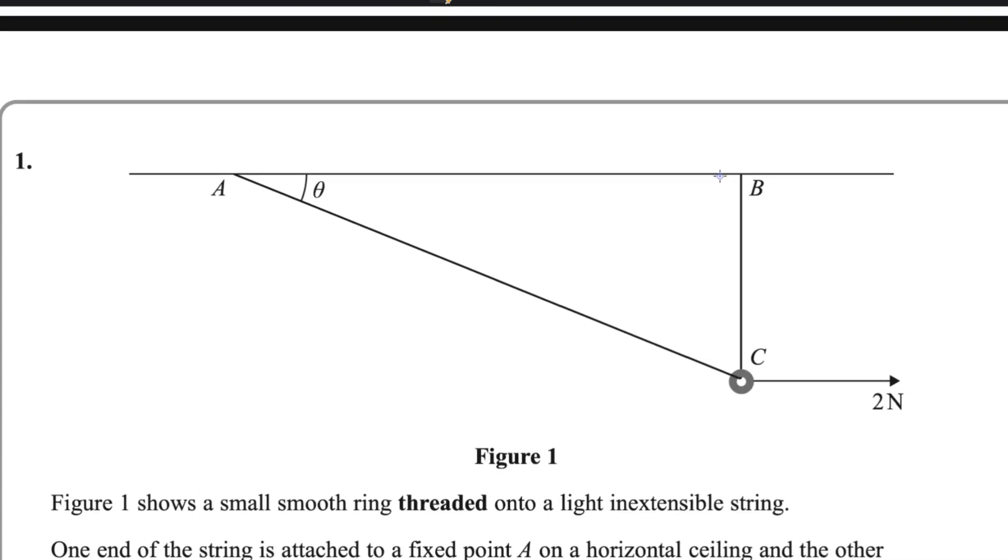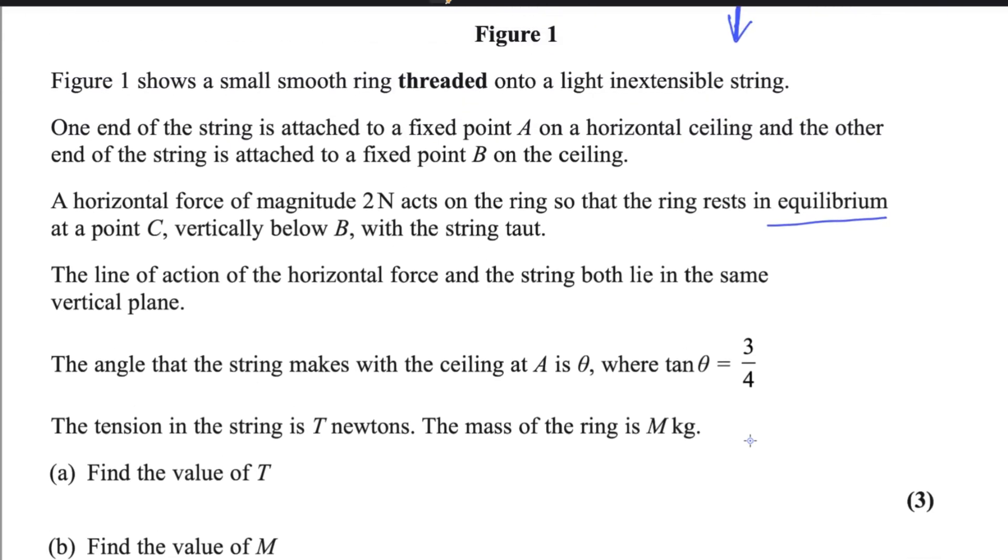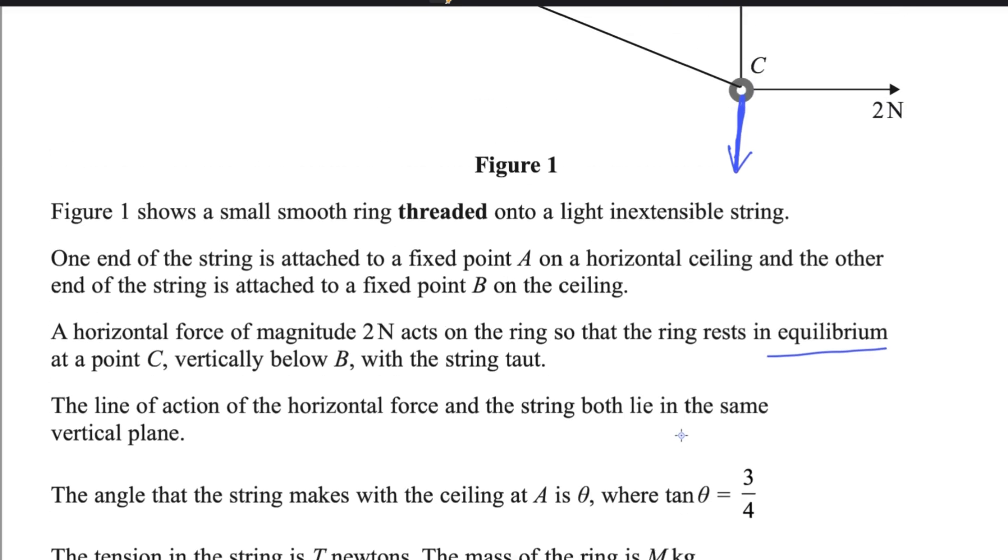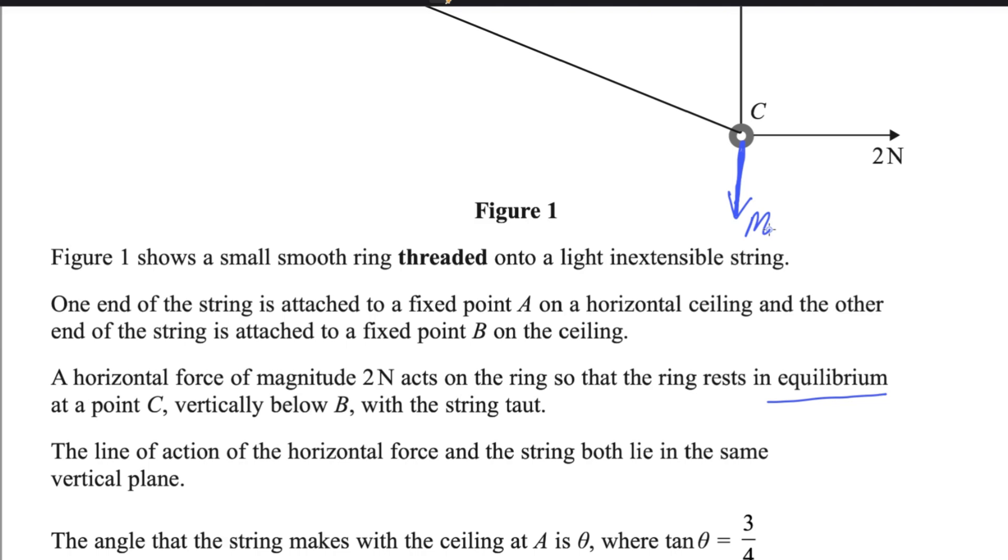The line of action of horizontal force and string both lie in the same vertical plane. It is acting vertically so this angle is 90 degrees. The weight of the ring will act downwards and both forces are in same line of action. You can draw here the force for weight, which will be MG, capital M and G.